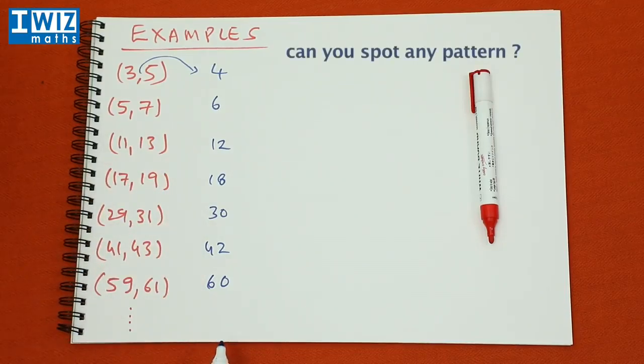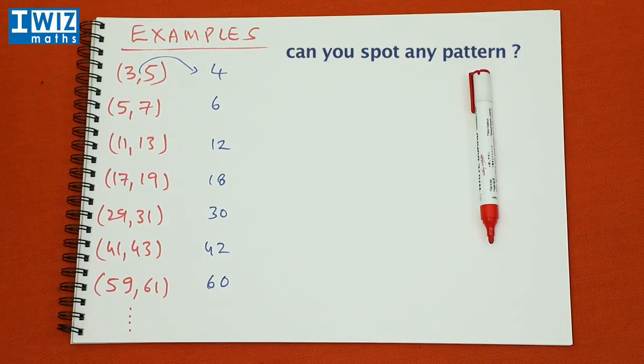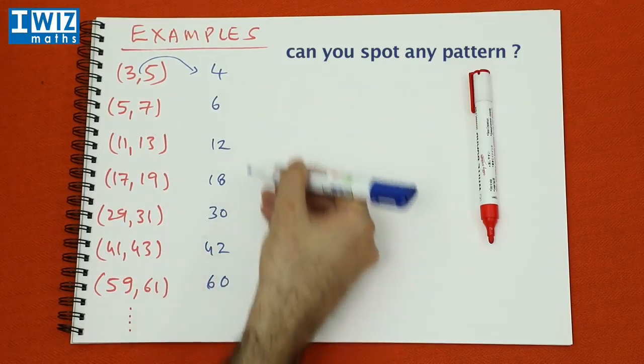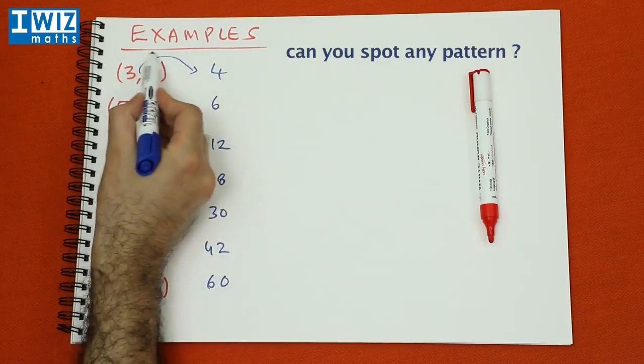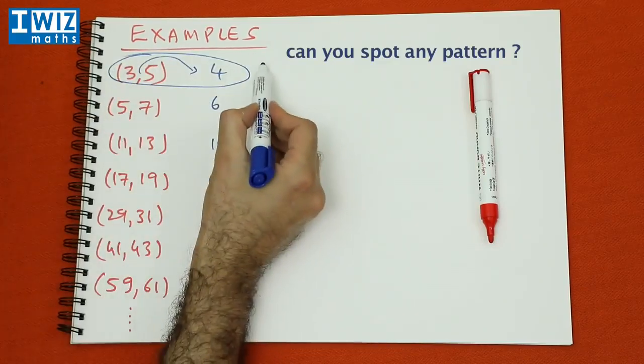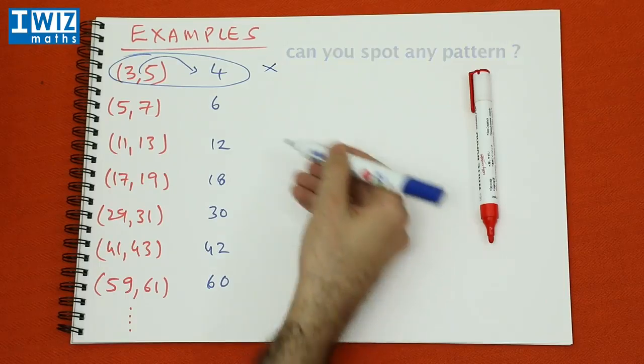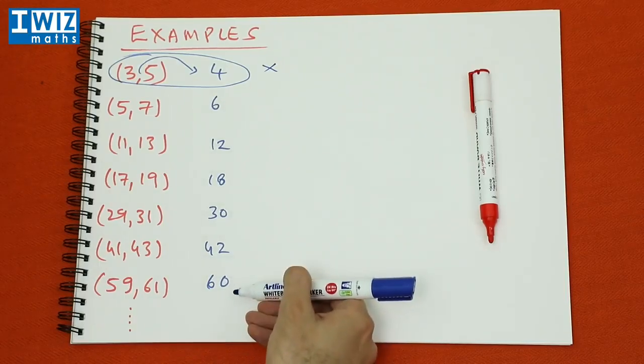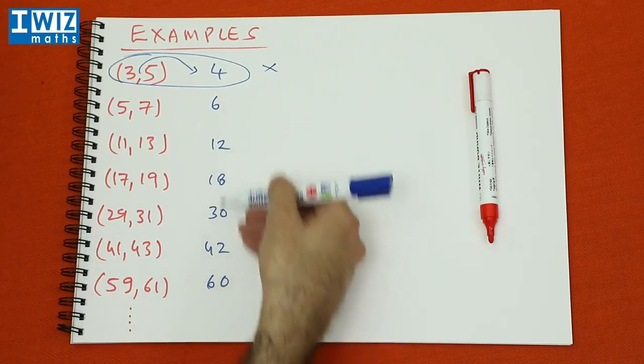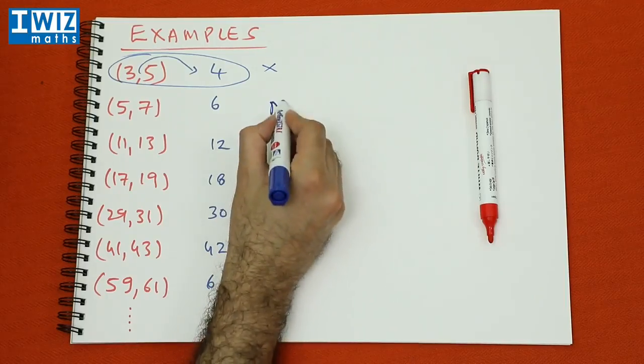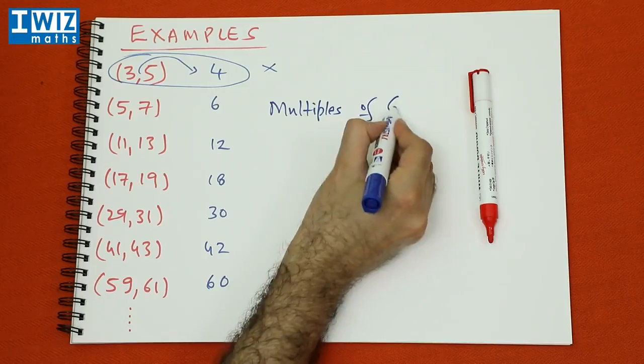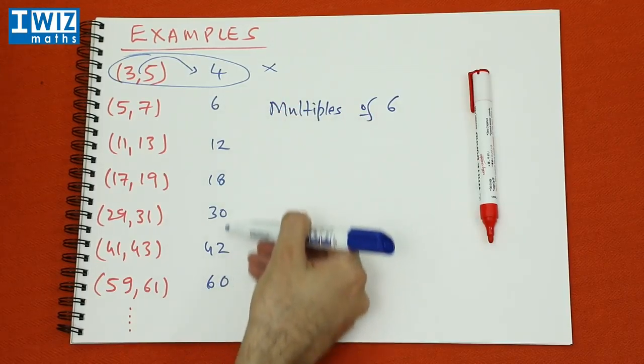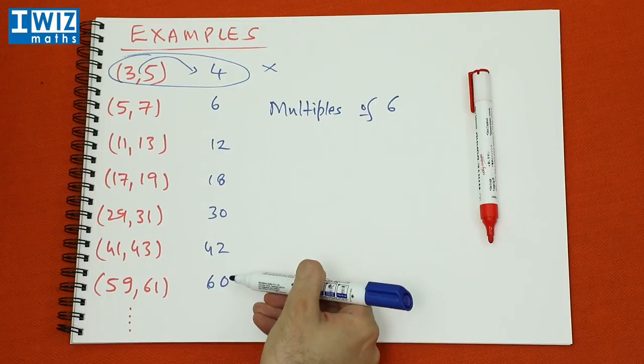Now is there a pattern that we can actually spot here? If we consider all of these numbers except the first one, so we don't consider the first twin prime, but we consider all the other numbers here, we find that all these numbers are actually multiples of 6. That's interesting, isn't it?